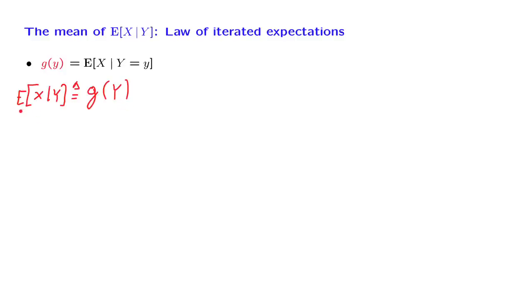So now we want to calculate the expected value of this object, which is written this way. Now this notation here may look quite formidable, but let's see what is happening. Inside here we have a random variable, and we take the expected value of that random variable.